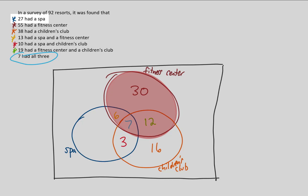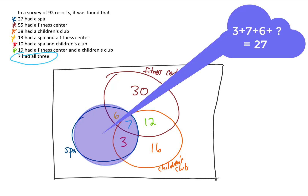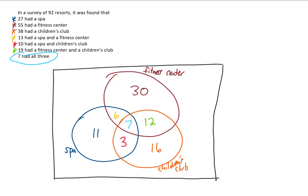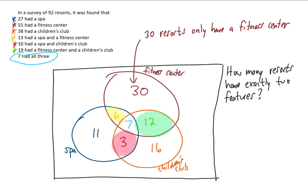27 of these resorts had a spa. We already have 3 plus 7 plus 6 equals 16 in that circle, and we need 27 total, so that leaves 11 resorts that only have a spa. Now we can answer questions: how many resorts only have a fitness center? The answer is 30. How many resorts have exactly two of these features? We look at the three pairwise-only regions: 6 plus 12 plus 3 equals 21 resorts have exactly two features.